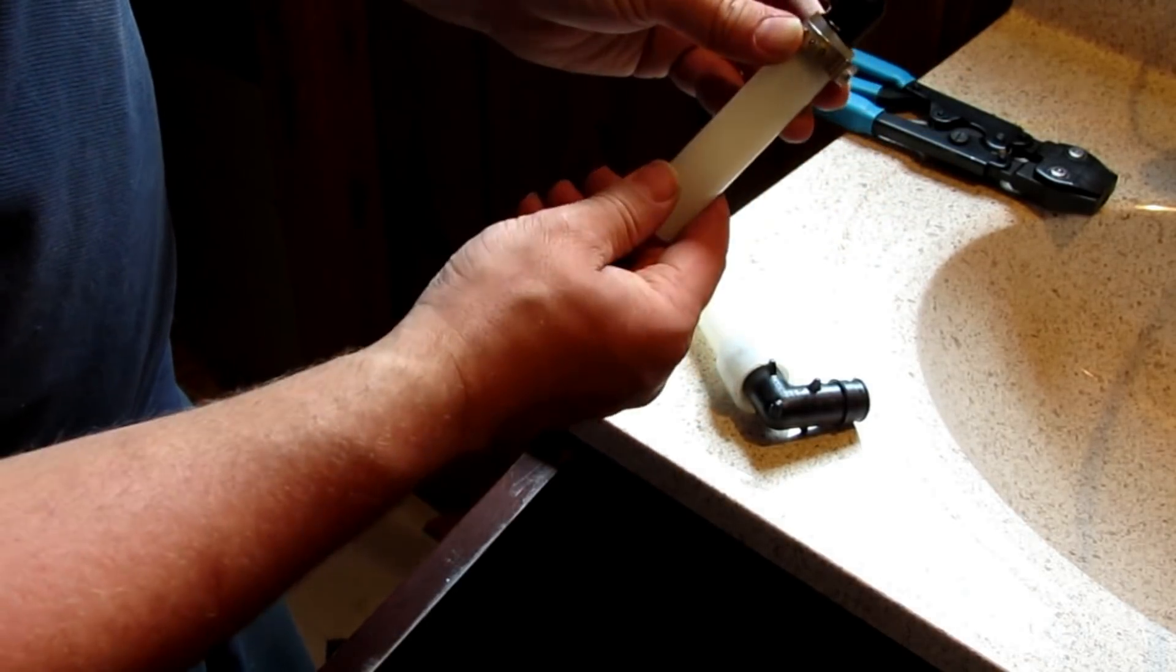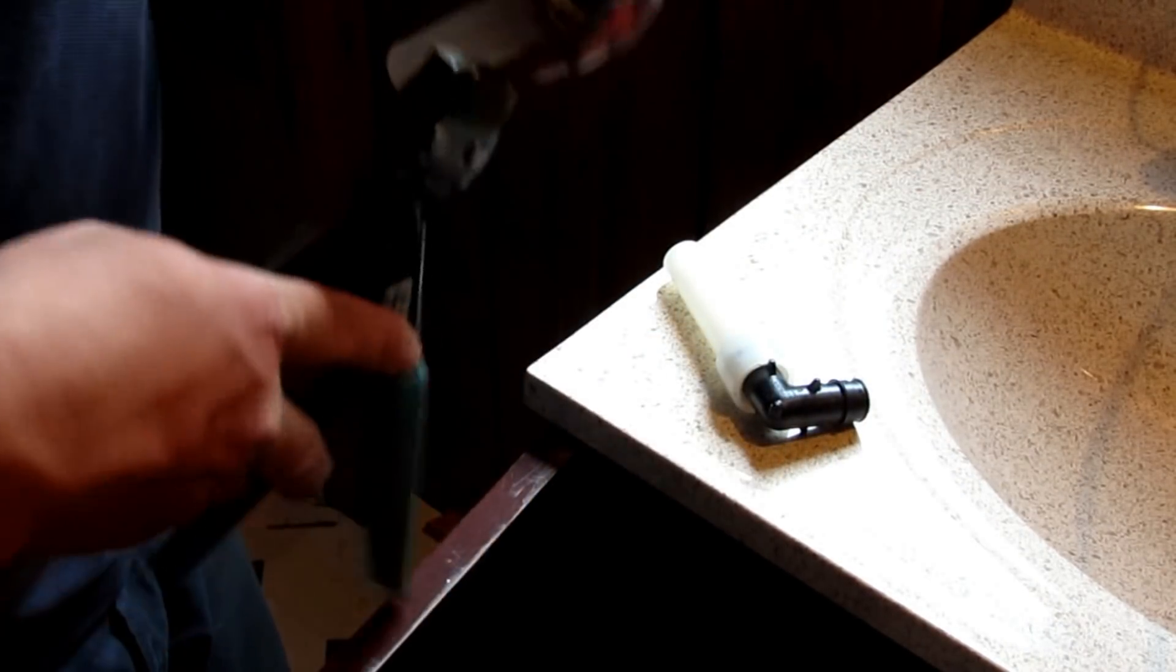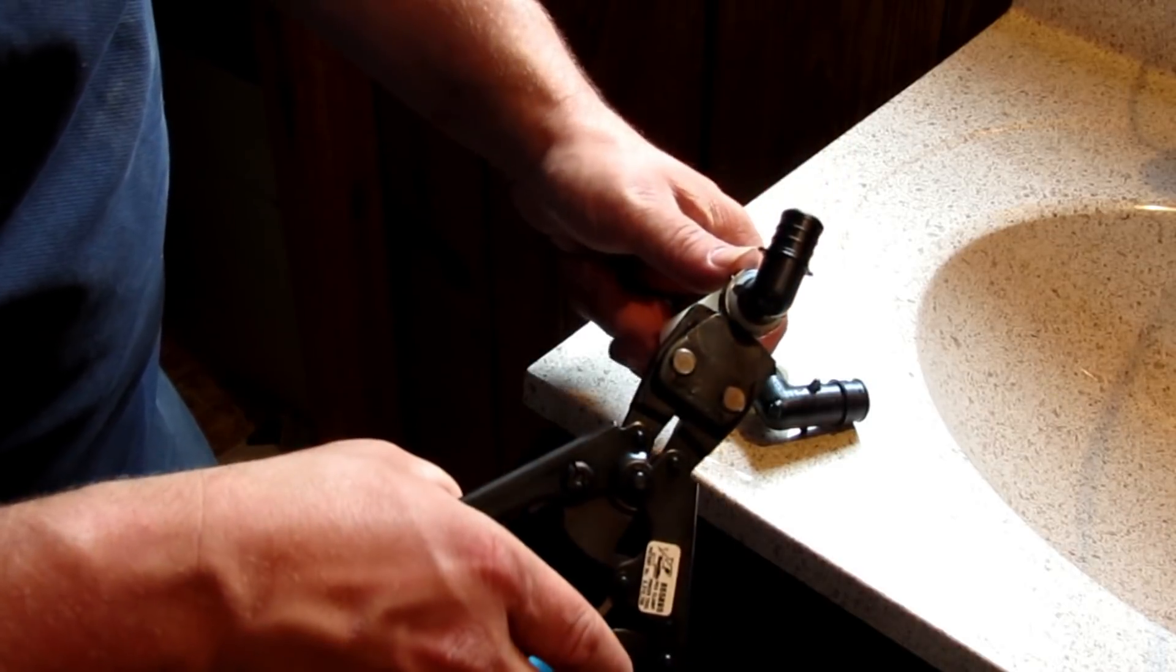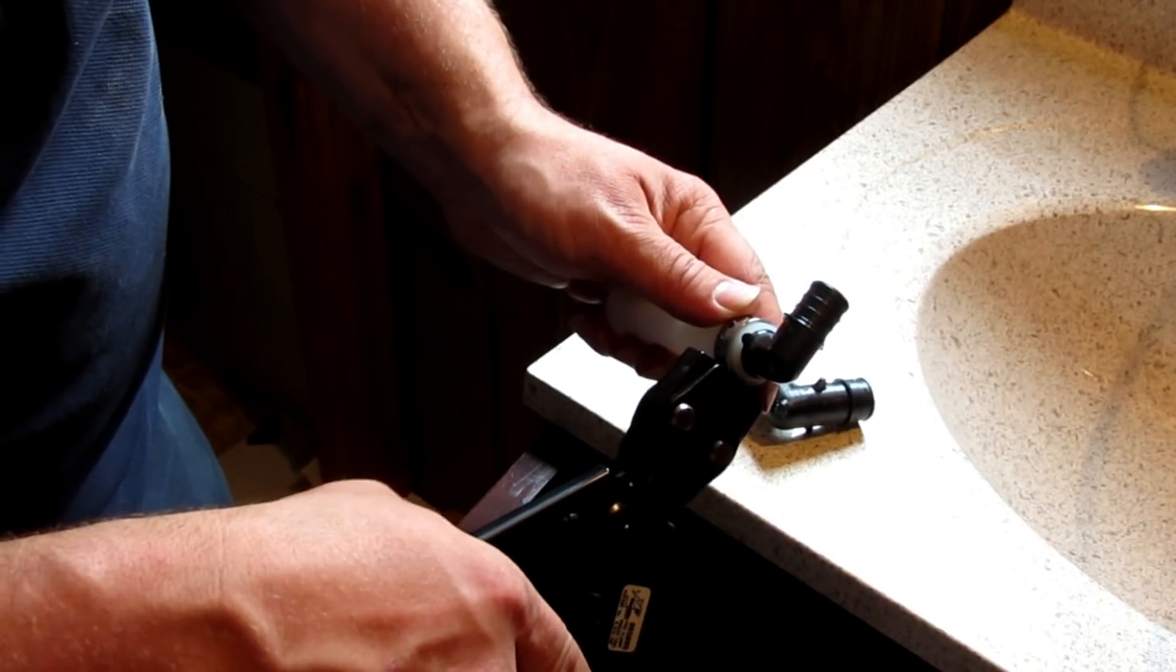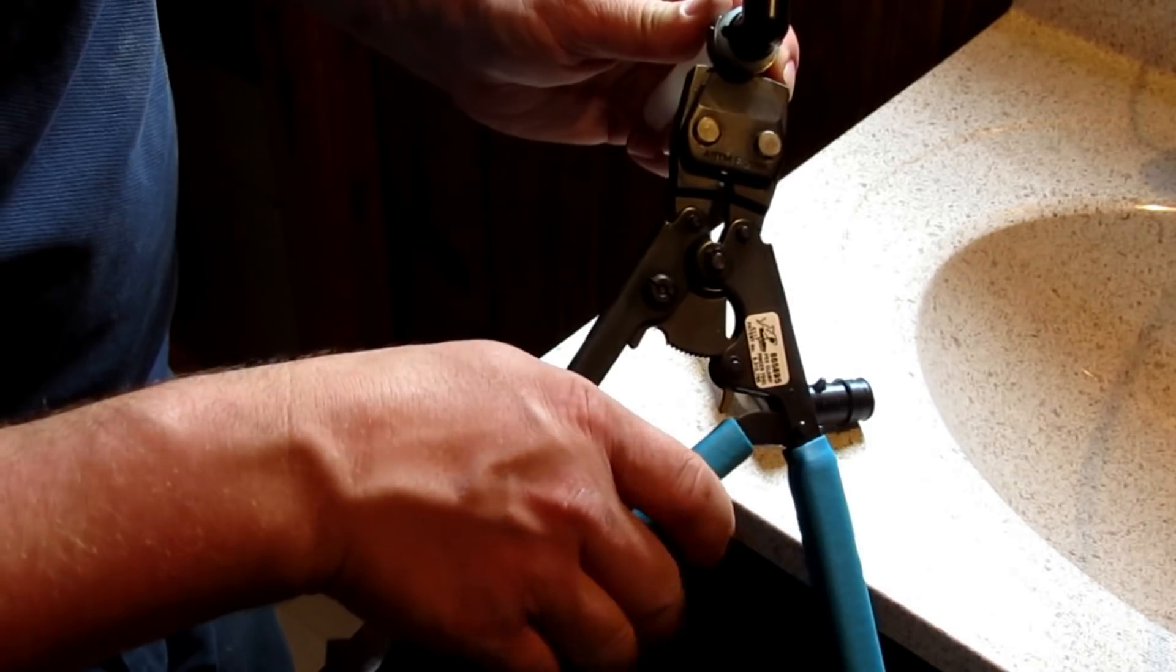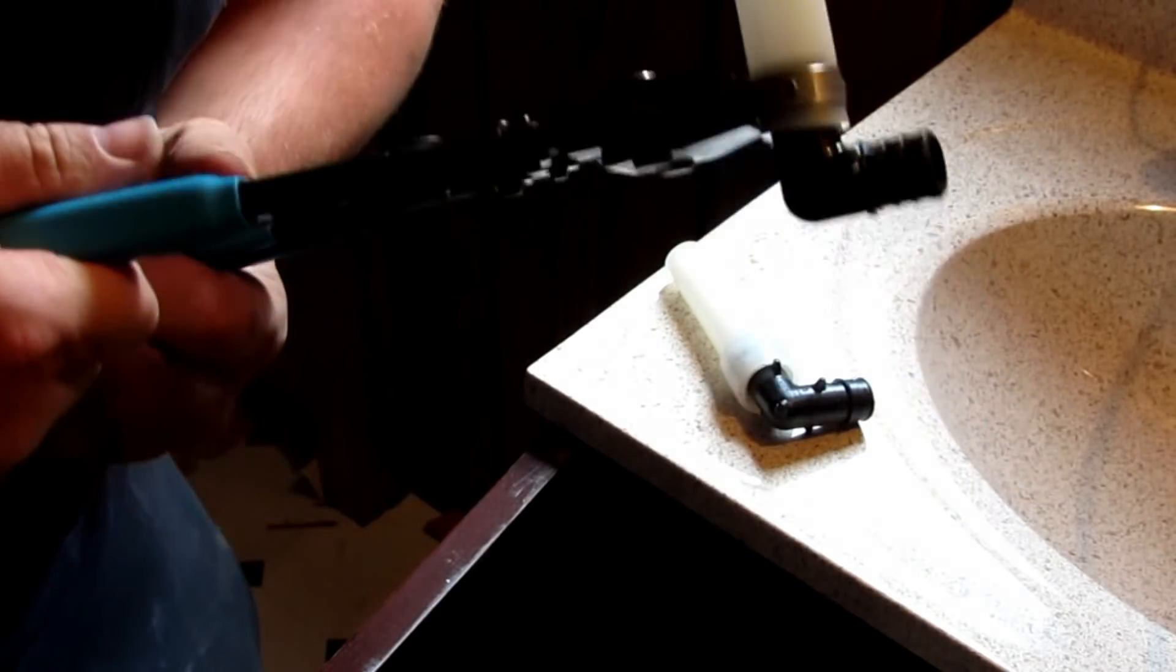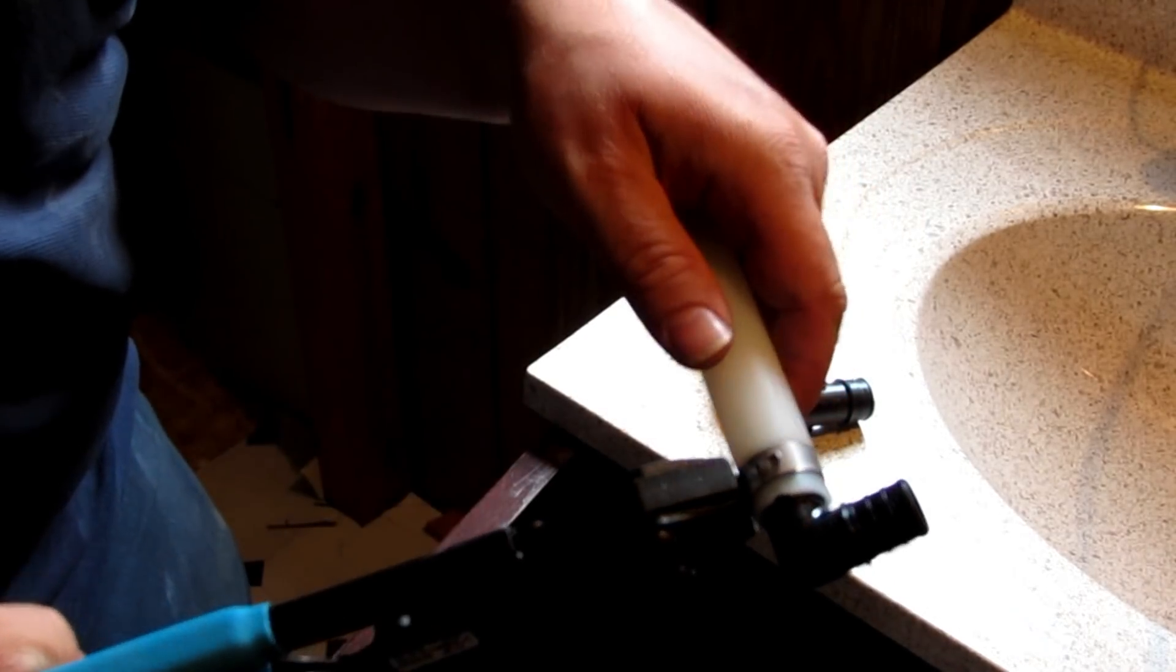You hold it down about that much, and then you take your hand crimper that they sell and you put that over the crimp ring like that, and then you position the ring and then you crimp it. This little handle here, you squeeze a little bit to kind of lock it into place, and then it folds out of the way, and then you have to use two hands to finish crimping it. You wait until it releases and you'll hear it click and then release.